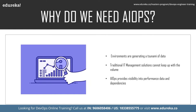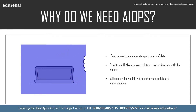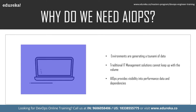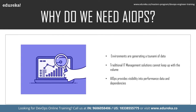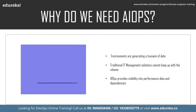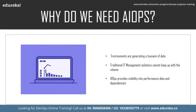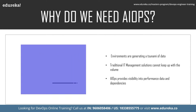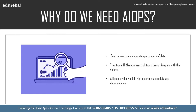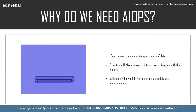Traditional domain-based IT management solutions cannot keep up with the volume. They cannot intelligently isolate significant events out of the crush of surrounding data. They cannot correlate data across different but interdependent environments, and they definitely cannot provide the real-time insight and predictive analysis IT operations teams need to respond to issues fast enough to meet user and customer service level expectations. This is where AIOps enters the picture. AIOps provides visibility into performance data and dependencies across all environments, analyzes the data to extract significant events related to slowdowns or outages, and automatically alerts IT staff to problems, their root causes, and recommended solutions.